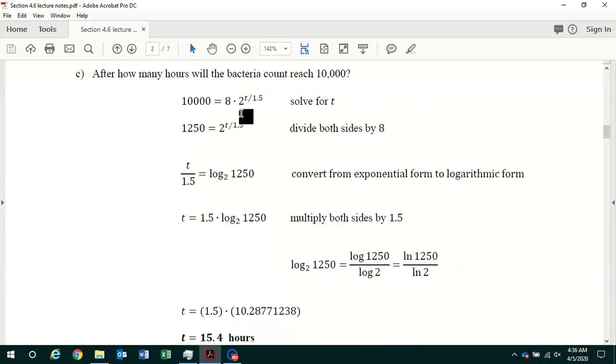First step, you've got to isolate the exponential. Divide both sides by 8 and we get 1,250 equals 2 to the t over 1.5 power. Now, we have an exponential equation.